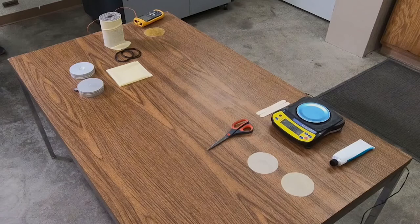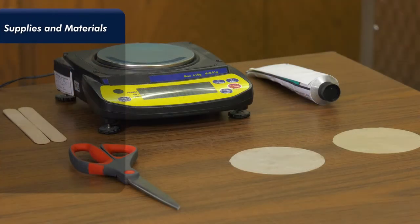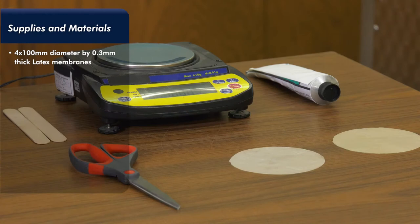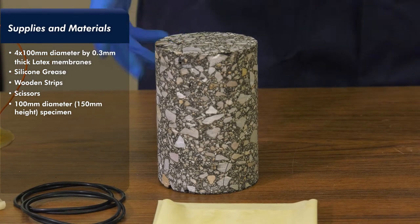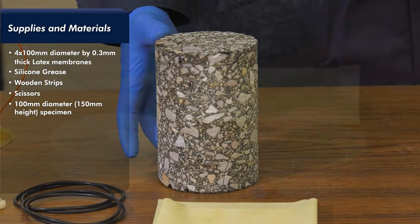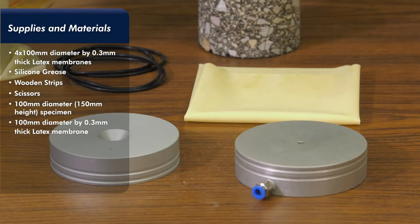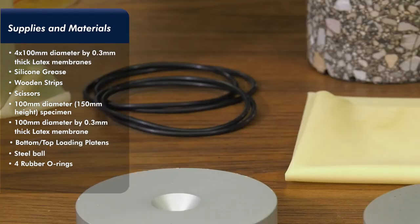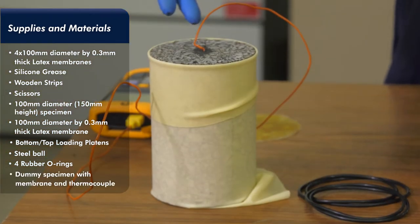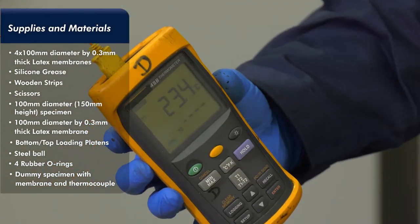Supplies and materials include: four 100mm diameter by 0.3mm thick latex membranes, silicone grease, wooden strips, scissors, 100mm diameter by 150mm high specimen, 100mm diameter by 0.3mm thick latex membrane to encase specimen, bottom and top loading platens, steel ball, four rubber O-rings, and a dummy specimen with membrane and thermocouple thermal probe installed in the middle of the test specimen.